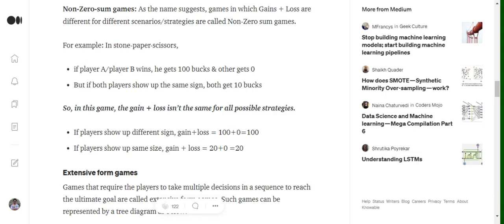But if both the players show up with the same sign, then gains plus loss equals 10 plus 10, because both the players are getting 10 bucks. Hence equals 20.